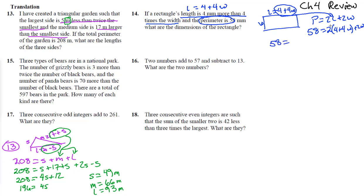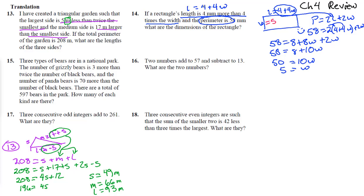Distributing gives 58 equals 8 plus 8w plus 2w. We've come out of the English language and turned it into math — 58 equals 8 plus 10w. Subtract 8 from both sides: 50 equals 10w, so w equals 5. Then the length is 4 plus 4 times 5, which equals 24. So the rectangle is 5 by 24 millimeters.